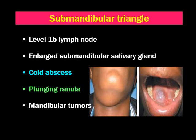Occasionally, it may be difficult to differentiate level 1b lymph nodes from an enlarged submandibular gland. To differentiate this, we use bimanual palpation or bidigital palpation. The submandibular gland is bimanually palpable whereas the lymph nodes are not bimanually palpable. Calculi, plunging ranula, and mandibular tumors also may present in the submandibular triangle.